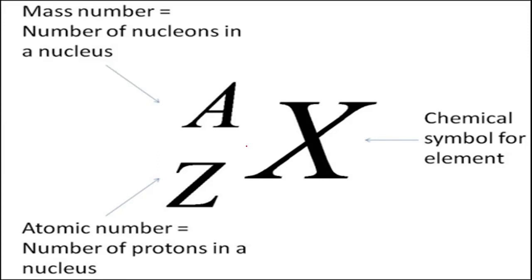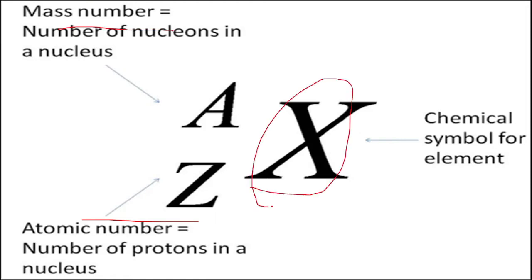Hello, let us see what is the atomic number and mass number of any element. So there is our element X — Z is the atomic number and A is the atomic mass. Atomic mass is the number of nucleons in a nucleus.